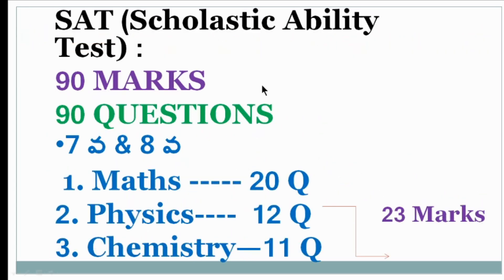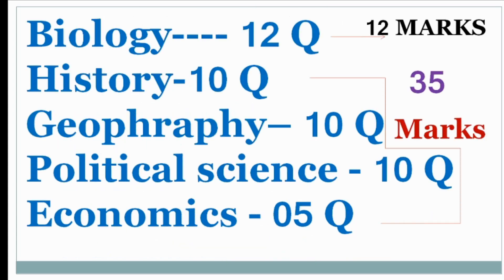For the Scholastic Ability Test, covering 7th and 8th class syllabus: Mathematics has 20 questions and 20 marks. In science: Physics has 12 questions, Chemistry has 11 questions, and Biology has 12 questions. In social studies: History has 10 questions, Geography has 10 questions, Political Science has 10 questions, and Economics has 5 questions, making a total of 35 questions for social studies.